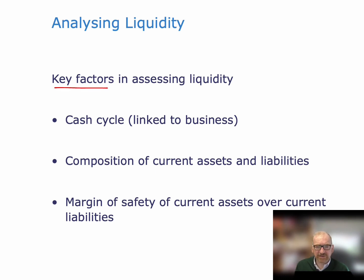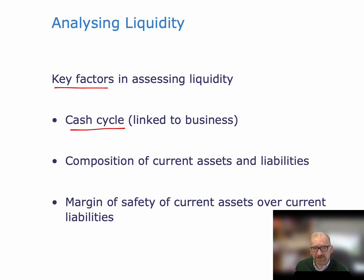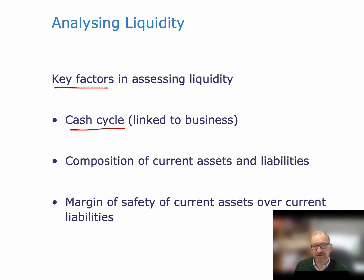So what are the key factors in assessing liquidity? Well, the cash cycle of the firm — the amount of time it takes the firm to convert whatever it does into cash. Take a manufacturing firm: it has to buy in raw materials, maybe store them for a while until it's ready to produce its products. It has to produce its products — maybe that's a process that takes a month. Then it has to store the products until a customer comes along and wants to buy them. Then once the products are shipped to the customer, the customer might have to pay 30 days later.